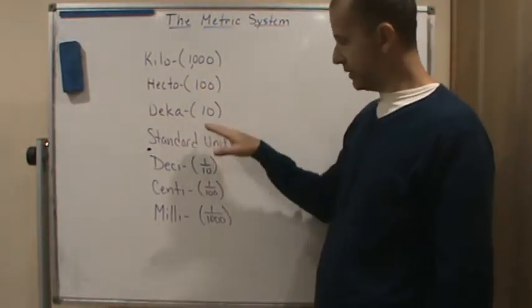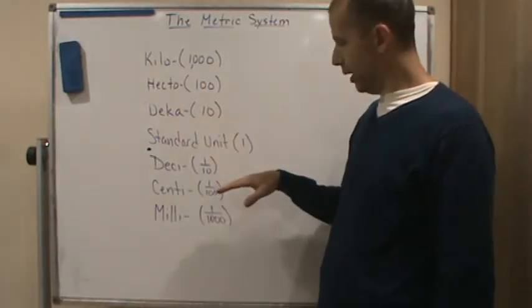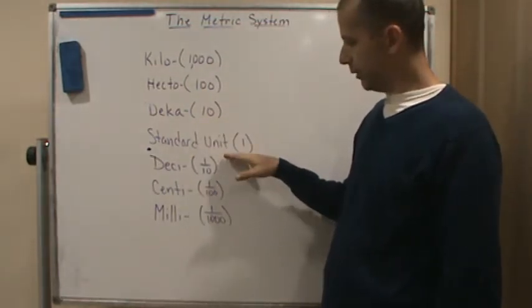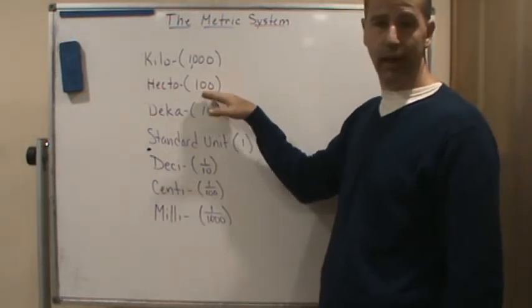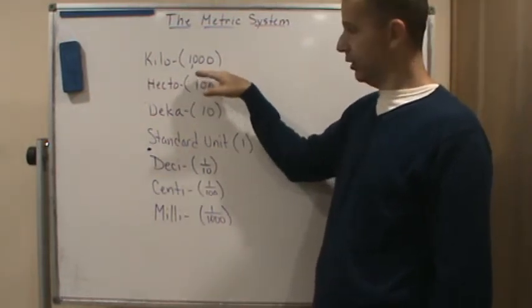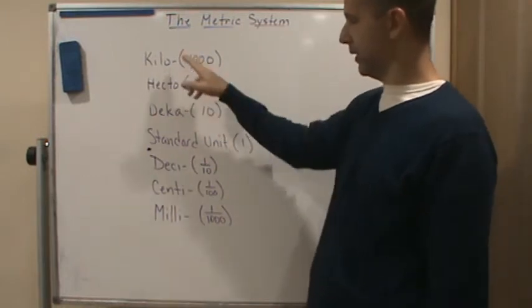If I'm talking about grams and I wanted a hundred of those, then that would be one hectogram. And then kilo means a thousand. So these prefixes tell us what we're going to multiply by.